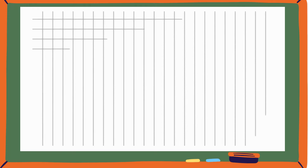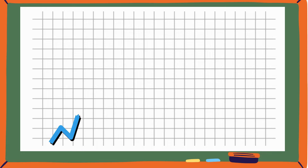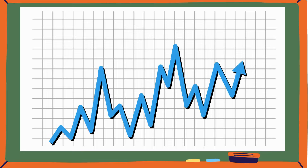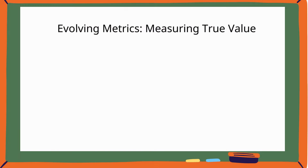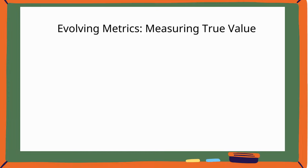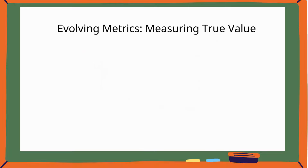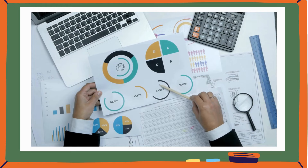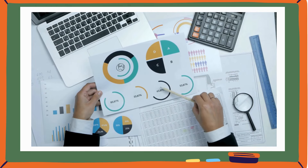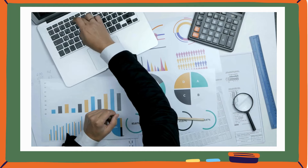What about metrics? Metrics have also moved beyond outputs to measuring true value. Metrics have always been a critical component of strategic planning, serving as the benchmarks against which success is measured. However, traditional metrics in medical affairs were often output-focused, centered on counting activities such as the number of medical education events, publications, or healthcare professional interactions. While these metrics provided a snapshot of activity levels, they fell short in capturing the true impact of medical affairs on patient care, clinical decision-making, and overall healthcare outcomes.